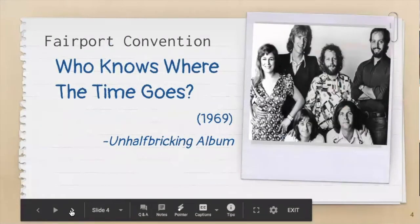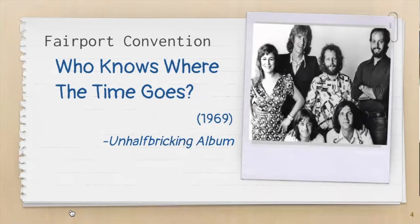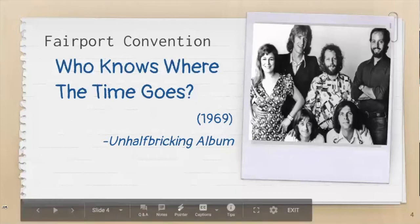The song that I've selected is by Fairport Convention. It's called 'Who Knows Where the Time Goes' from 1969. The album is called the Unhalfbricking album. It's a beautiful tune — it's got a great vocal, three beautiful verses of music. Just a really beautiful gem of music to listen to.